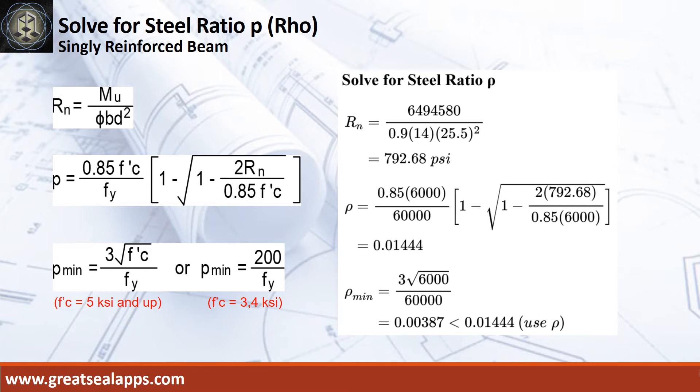Resistance factor equals 0.9. b equals 14 inches. And d equals 25.5 inches.